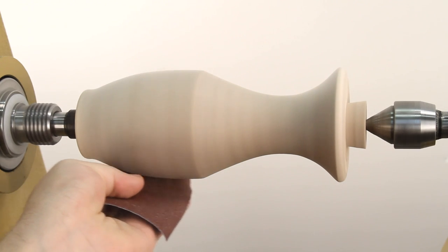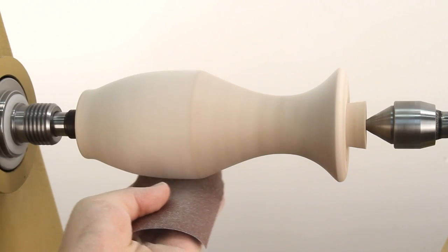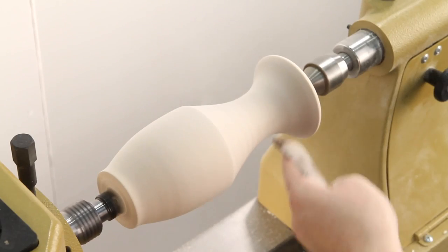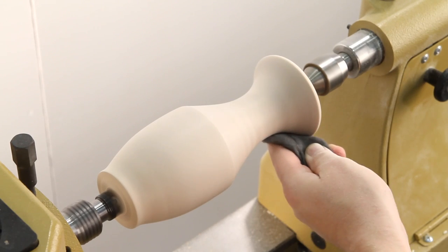Start by sanding with 180 grit, ensuring that the surface to be colored is flawless of any tearouts or disturbed grain. Next, continue sanding through 400 grit, then finish the job with steel wool.